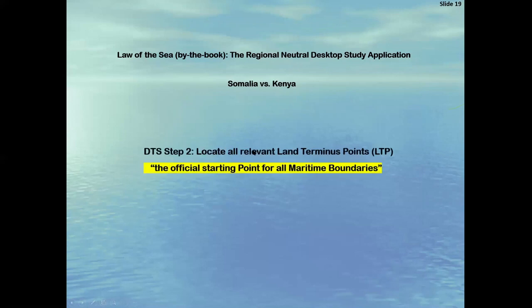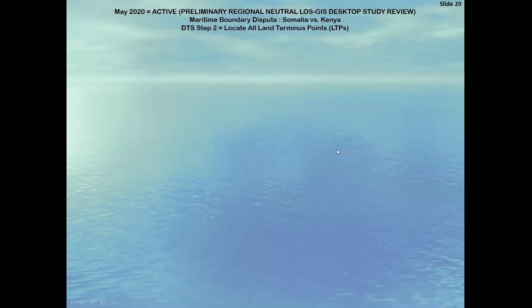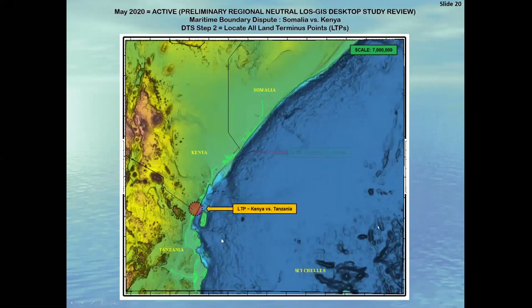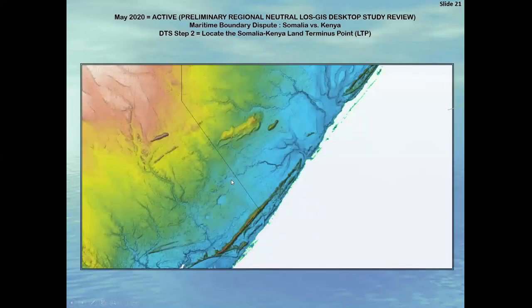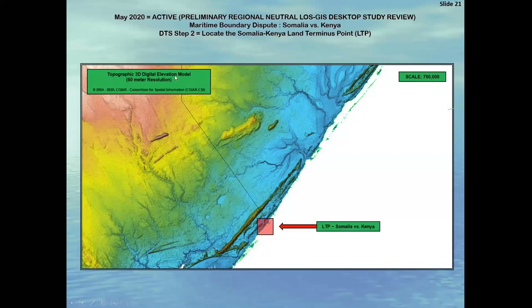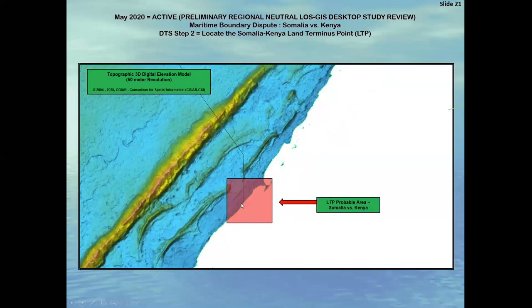Step two in the desktop study: locate the land terminus point. This is going to be a huge effort. Some countries have spent up to a year just to locate this land terminus point. Analyzing our data set: we already know there's a frontier for Kenya and Tanzania. Here's the critical focus area — the land terminus point needs to be located for Somalia and Kenya in order to generate a maritime boundary. We're going to go through a bunch of steps, using topography data and a wonderful land-based 3D elevation model. The land terminus point is where land terminates into the sea, so this is somewhere in here where we need to locate this point, and we need a whole bunch of different data sources.